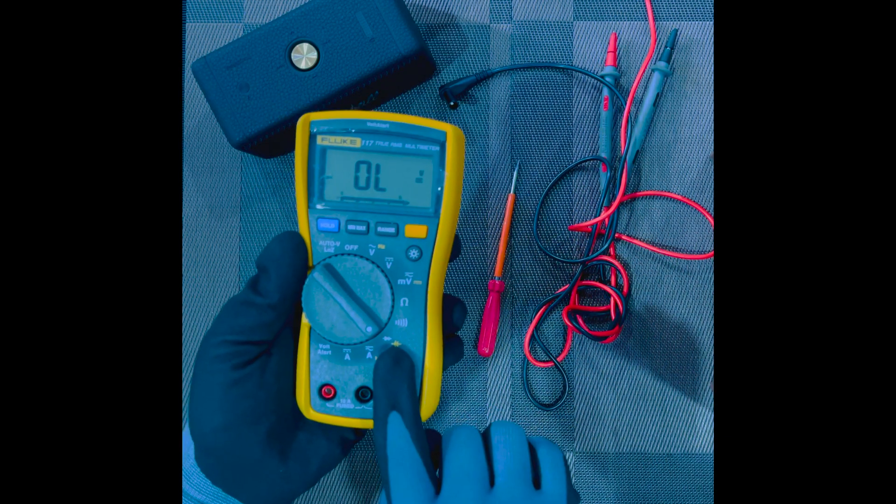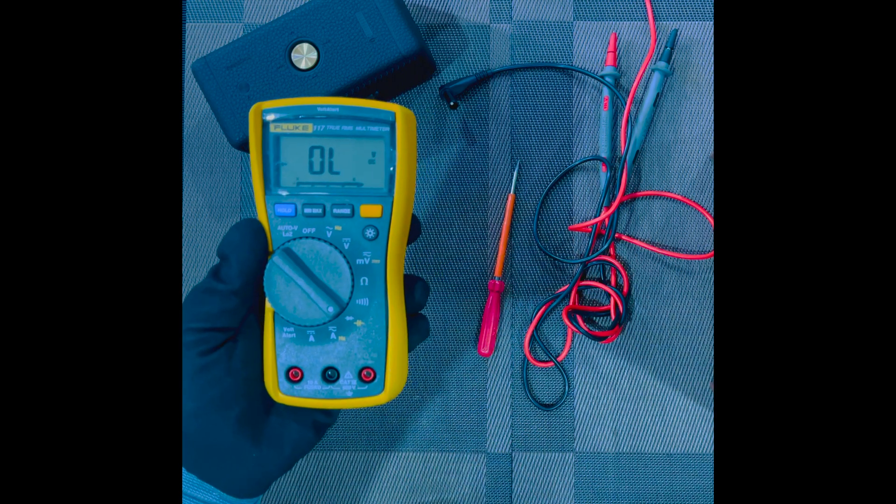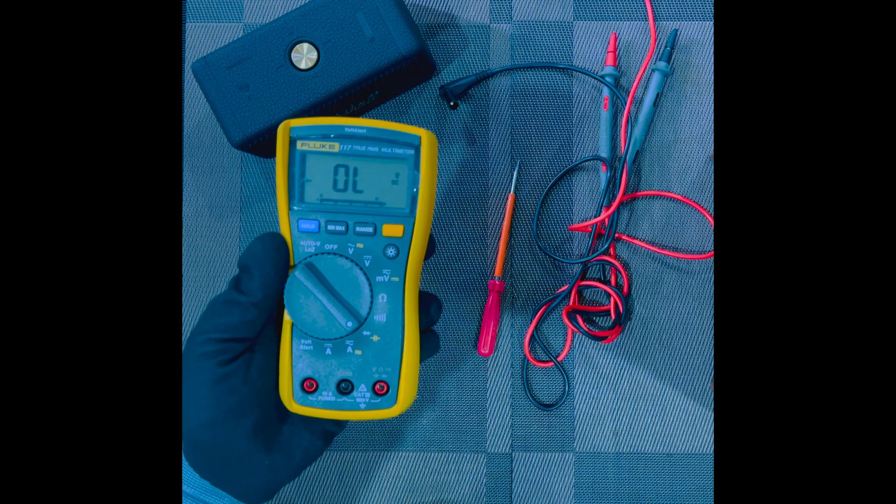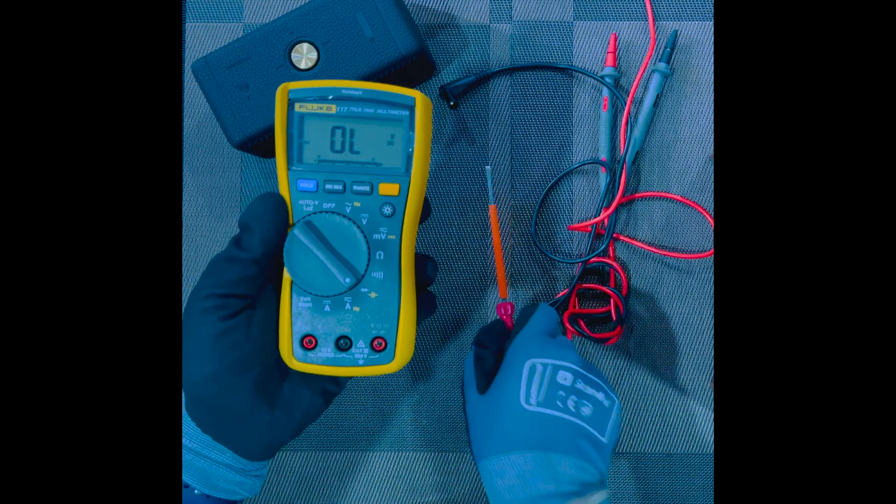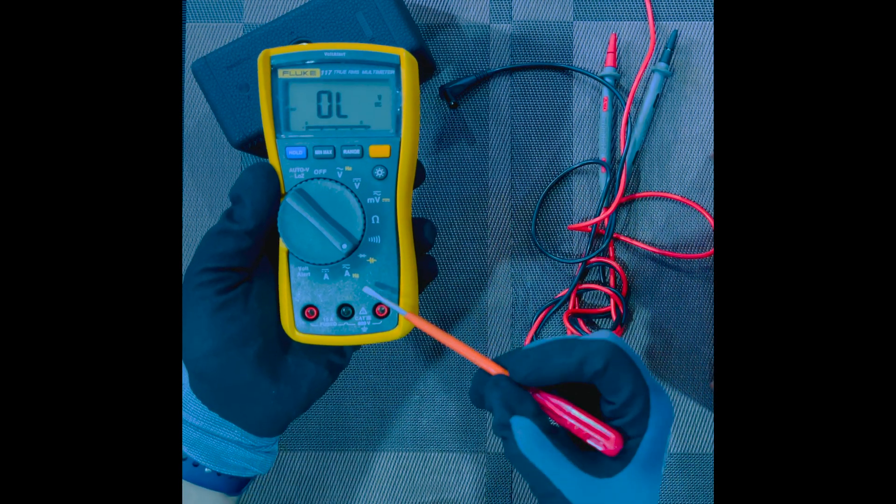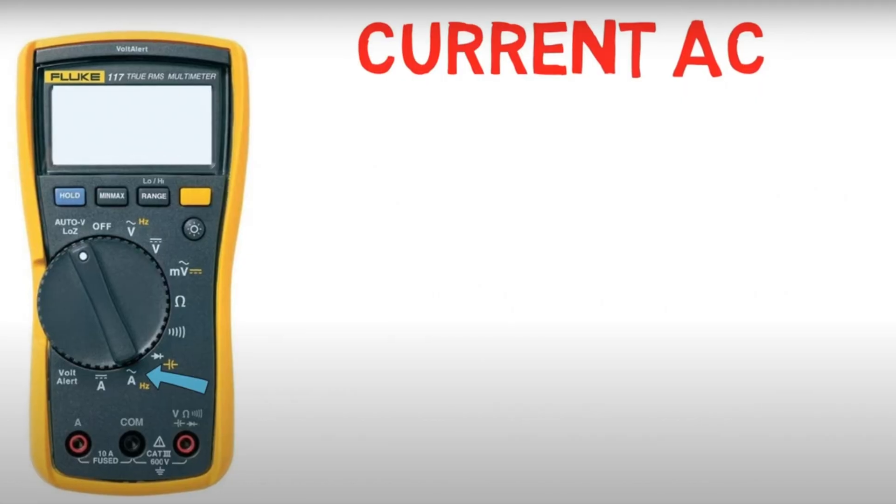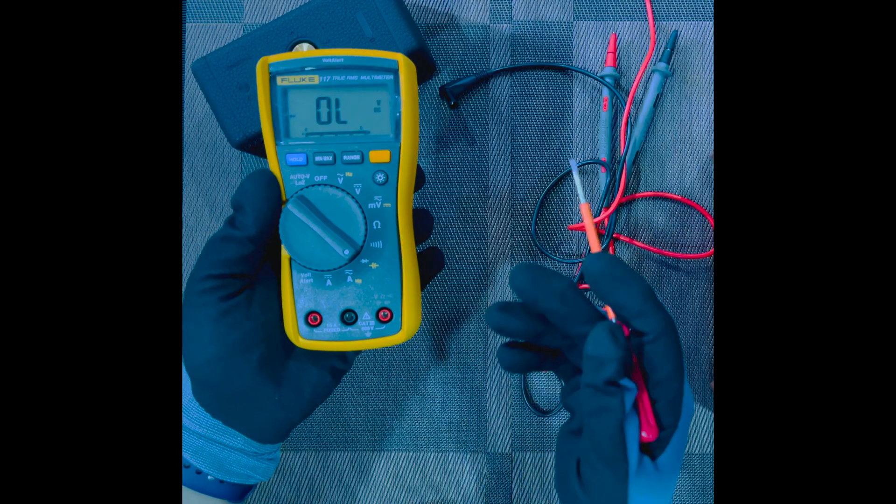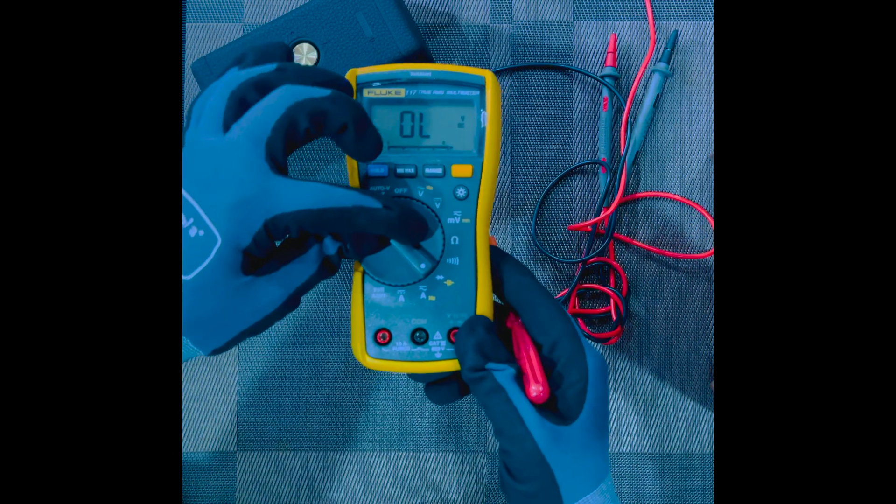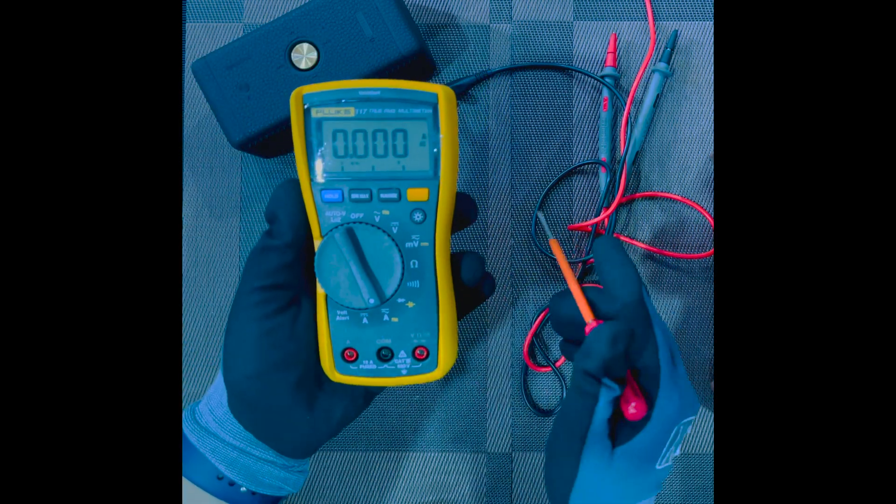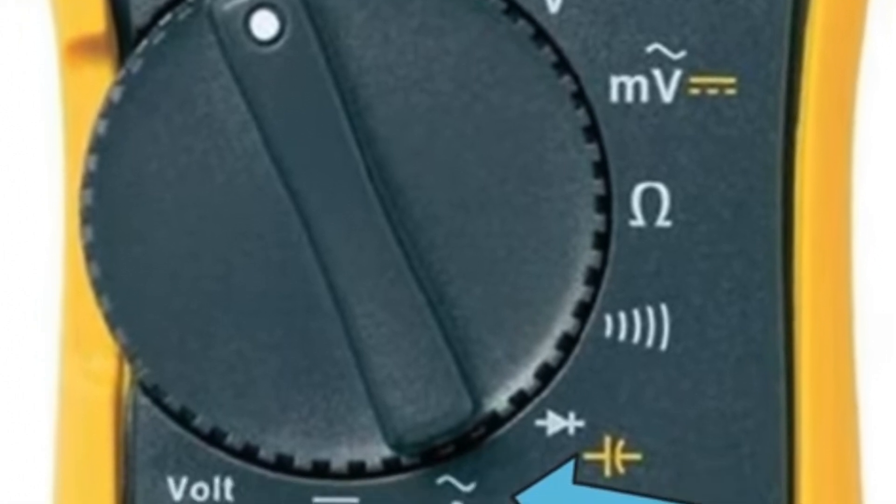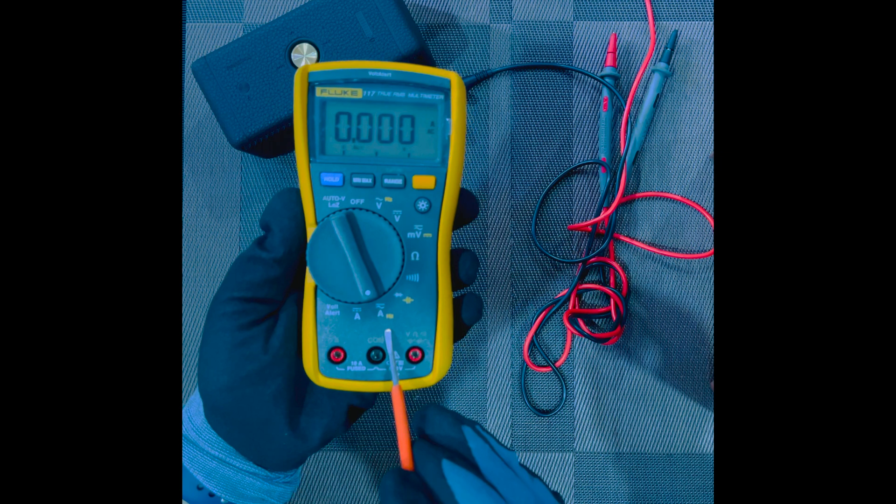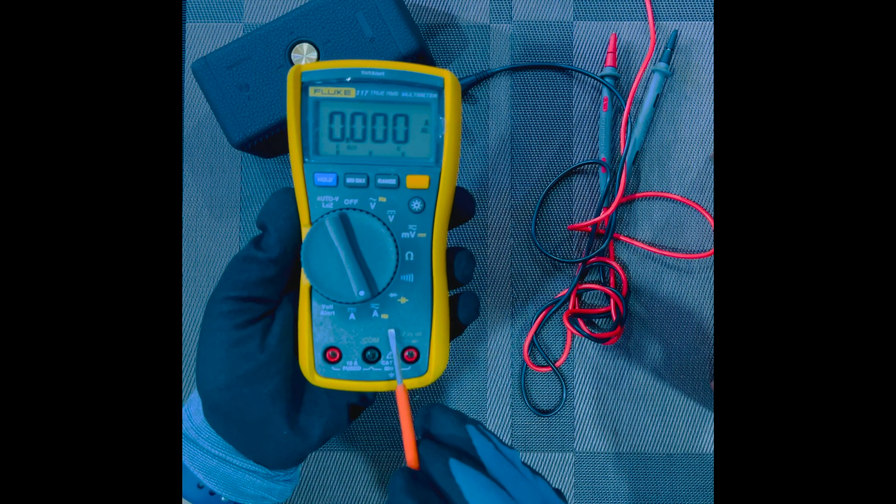This completes our diode test mode. Moving on to the next mode which we have is current AC - you see this one, AC current mode. We will move right next to this. This mode is a current AC mode.